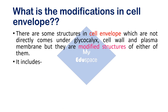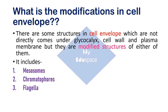These modifications include mesosomes, chromatophores, flagella, pili, and fimbriae. Let's understand these structures one by one.